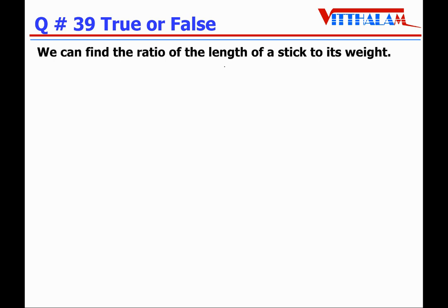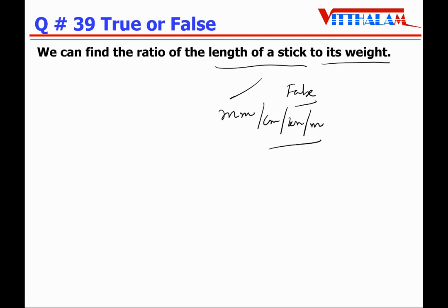Question 39: We can find the ratio of the length of a stick to its weight — it is False. Because the length of a stick may be in mm, cm, km, or meters, while weight is a different kind. Quantities are supposed to be of the same kind and in the same units, so here we cannot find the ratio.